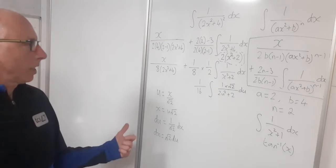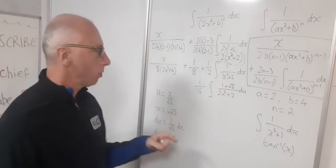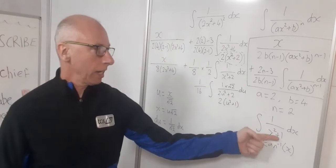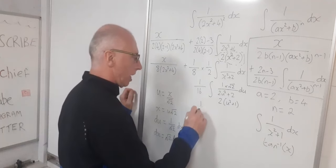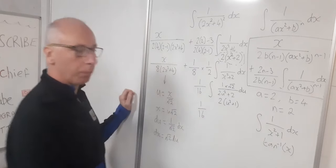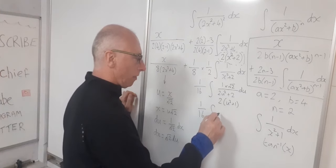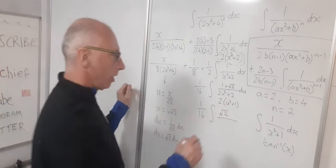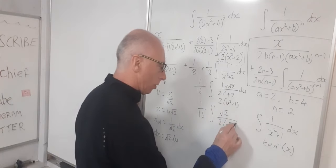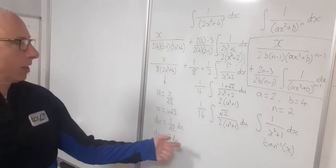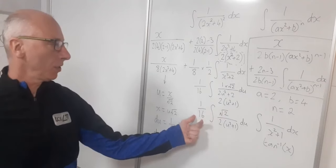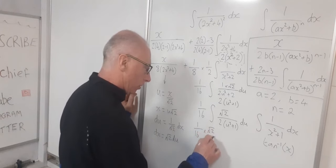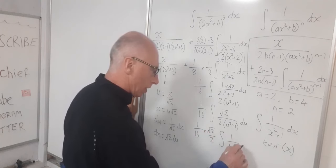Factoring out the 2 from (2u² + 2) gives 2(u² + 1). So now we've got 1 over 16 times √2 over [2(u² + 1)] du. Taking √2 over 2 out to the front, we're left with 1 over (u² + 1) inside the integral. So the expression becomes (1/16) × (√2/2) times the integral of 1 over (u² + 1) du, which is now in the standard inverse tangent form.